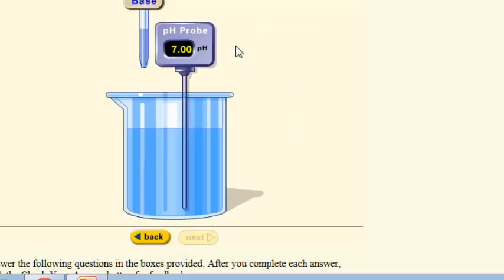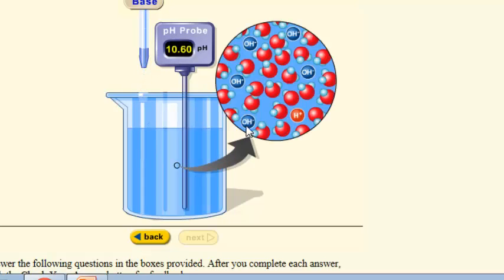Whereas if we took our neutral solution and we added base to it, you can see that the pH number is going up. And what's going to actually happen is now we have more hydroxide ions than we do hydrogen ions. And that is considered a base.